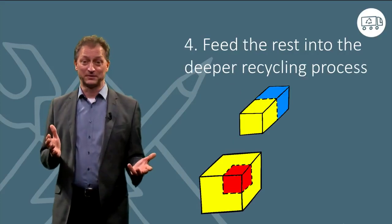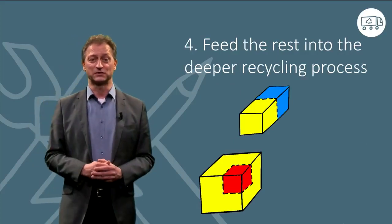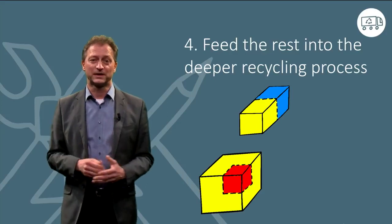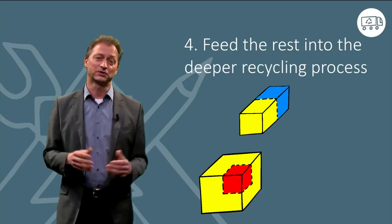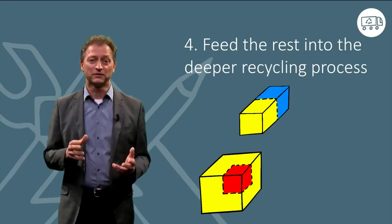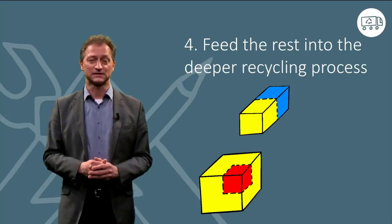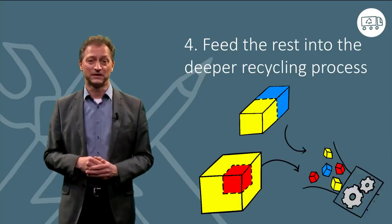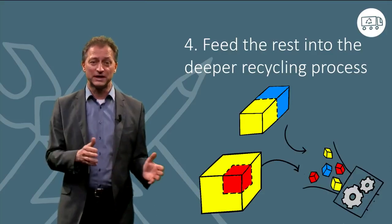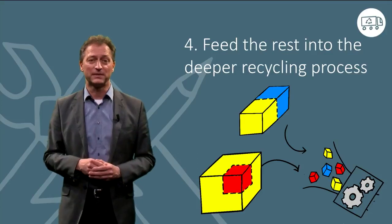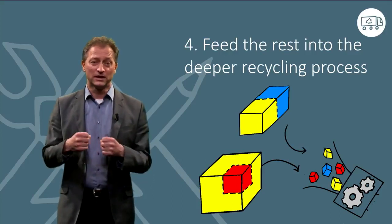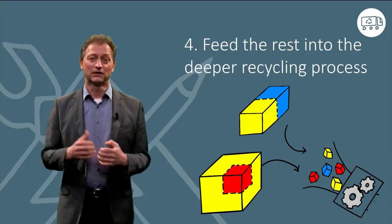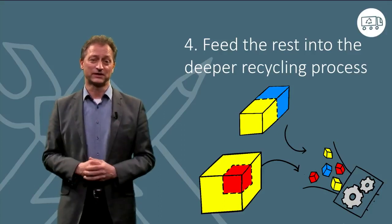The fourth step, feed the rest into the deeper recycling process. The residual parts of the product, the ones which are not easy to reuse or re-manufacture as they are, will now be fed into the recycling process. The aim of these processes is to separate or liberate as many different materials as possible. At this point, all these materials are still joined or linked to each other, and a lot of energy will be needed to break these connections.